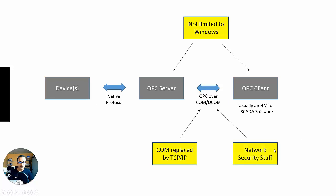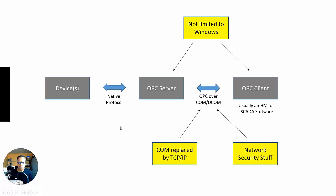Then there's a bunch of network security stuff, which is good because with classic OPC, once you knew where the OPC server was and could browse it, you could connect and wreak havoc. So it's good to have a secure connection between these two. There's user authentication, authorization, certificates, encryption — I need to know about that stuff practically. That's the third aspect.